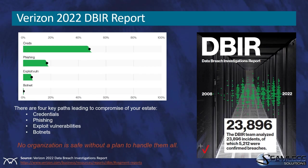The Verizon 2022 Data Breach Investigation Report — the DBIR — comes out every year since 2008 and people in my line of work read it cover to cover. It's about 120 pages. According to the DBIR, there are four key paths leading to compromise: credential theft, phishing, exploiting vulnerabilities, and botnets. Not everybody knows what a botnet is — and botnets are the reason why everything is a target, including grandma's iPad.